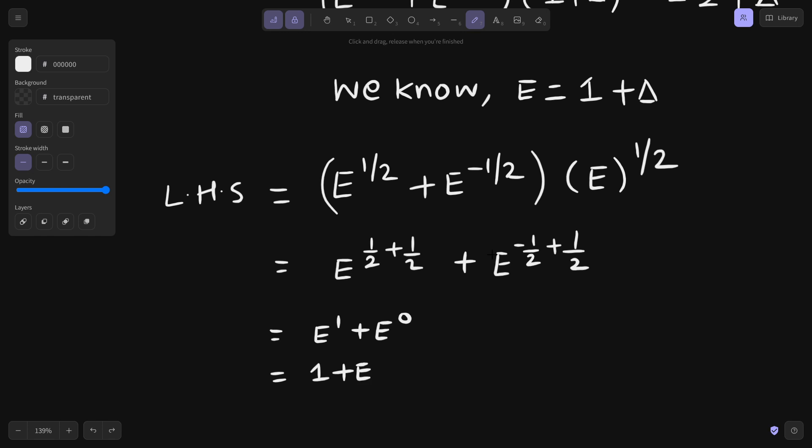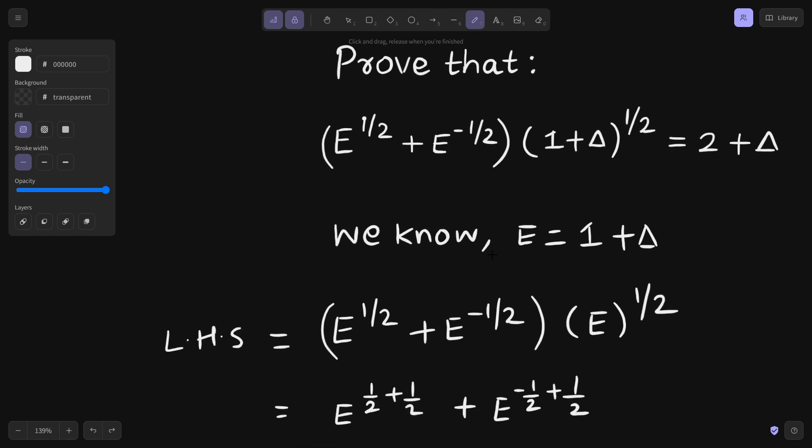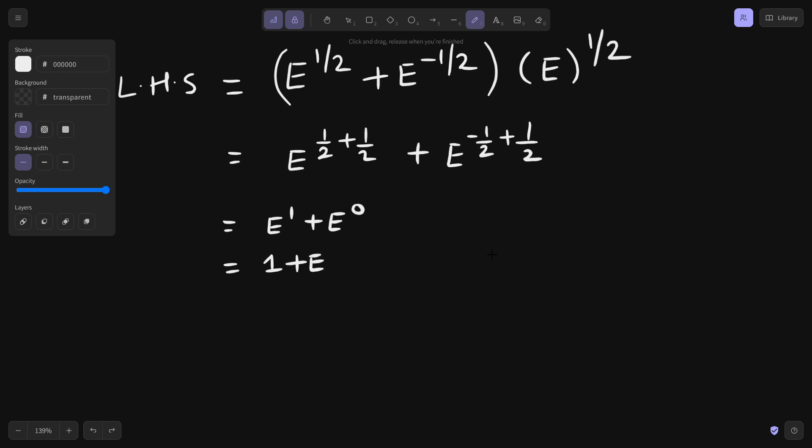And again, because we want RHS in terms of delta, we can replace E by 1 plus delta. So you get 2 plus delta, which is your required RHS.